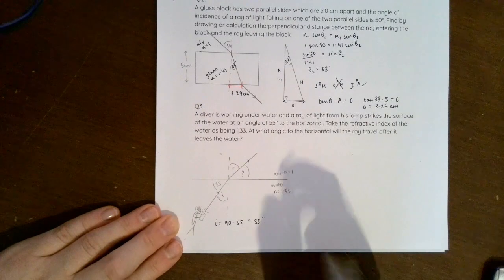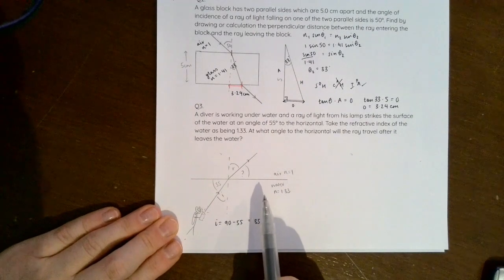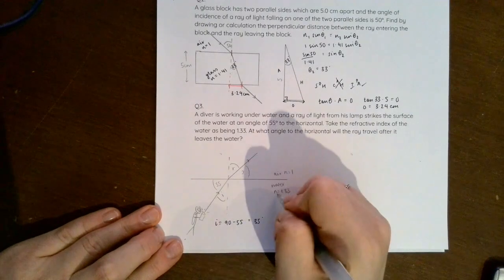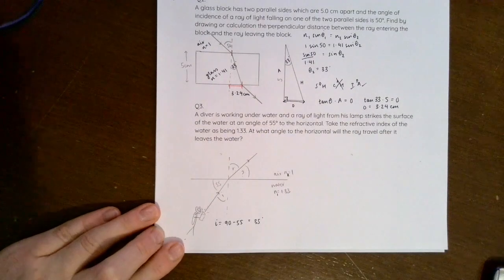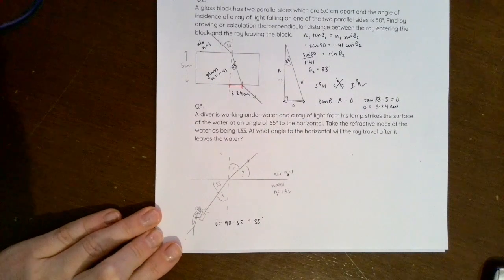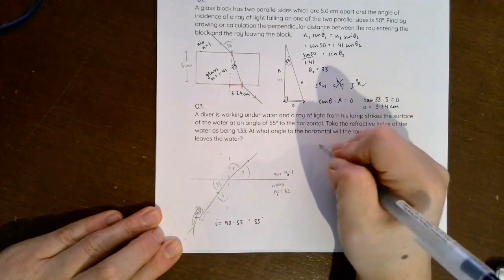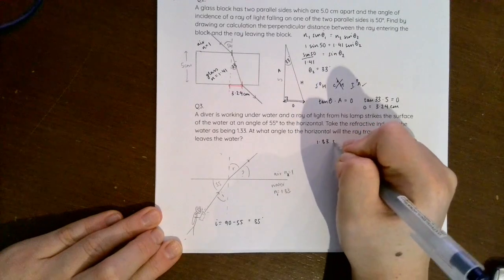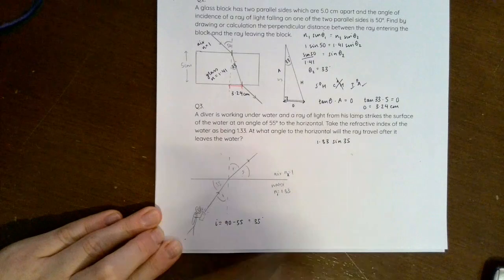So I also know that this time I'm starting in water because the diver is already underwater. So we've got n₁ is 1.33, and then n₂ we go into air is 1.